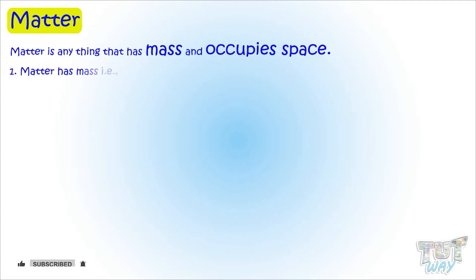Definition of matter is: matter is anything that has mass and occupies space. Now let's understand this definition. First point is matter has mass. It means matter has some weight. Second point is it occupies space. It means matter needs space.